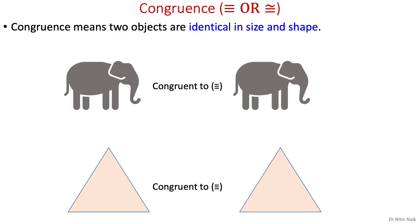What is congruence? In geometry, congruence means two objects are identical in size and shape, whether two dimensional or three dimensional. For example, in figure 1, the left hand side elephant is congruent to the right hand side elephant, meaning that they are identical in size and shape.